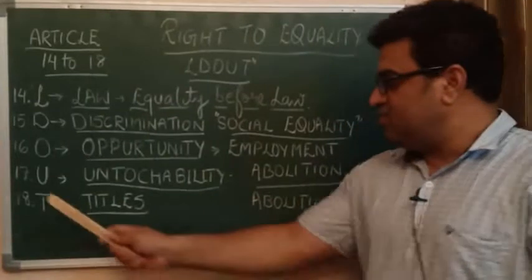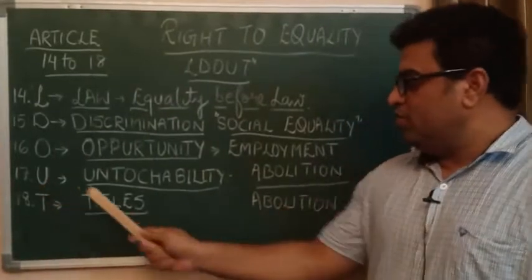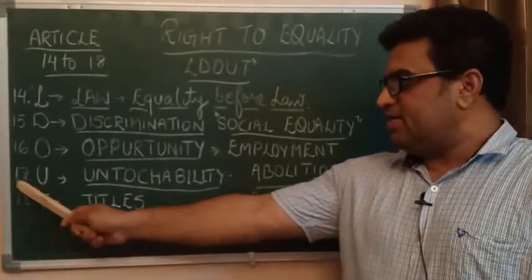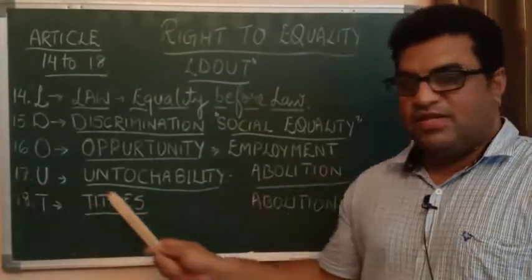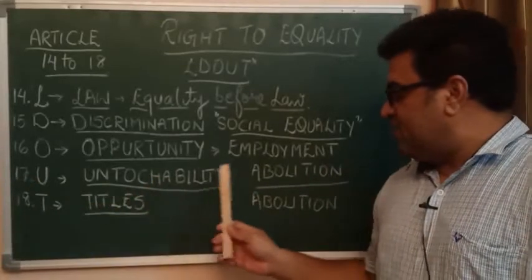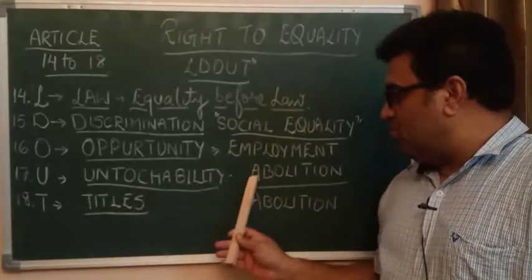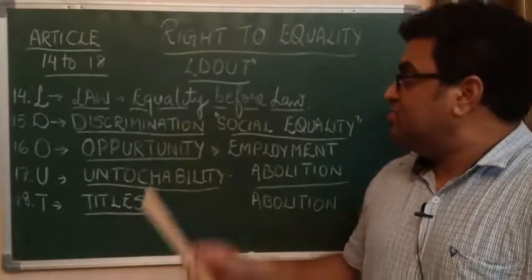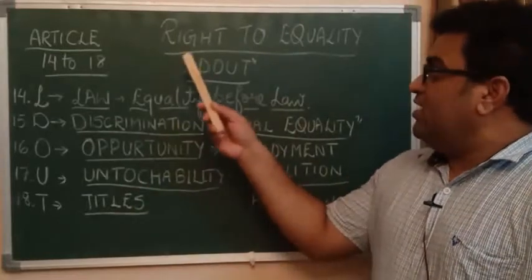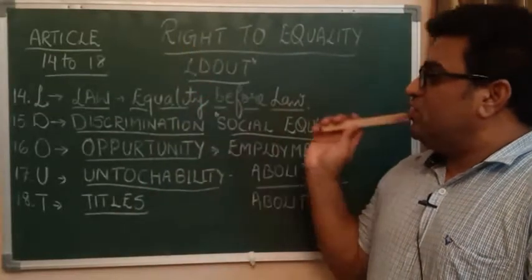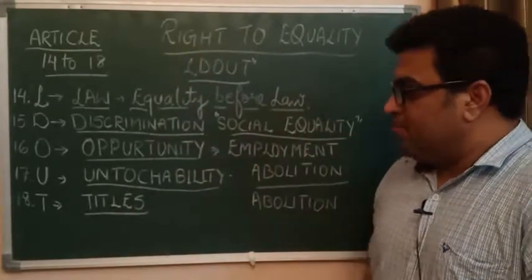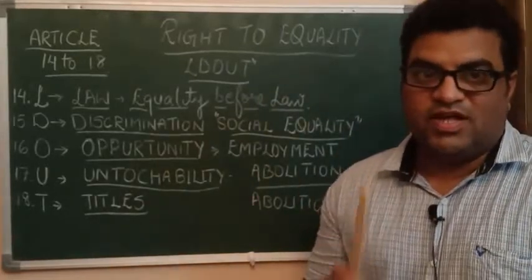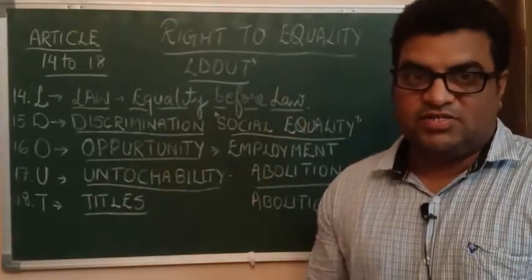The next letter is U — U for untouchability. Under Article 17, untouchability has been abolished according to the Indian Constitution as per your Right to Equality. Now no one can consider any other person as untouchable.